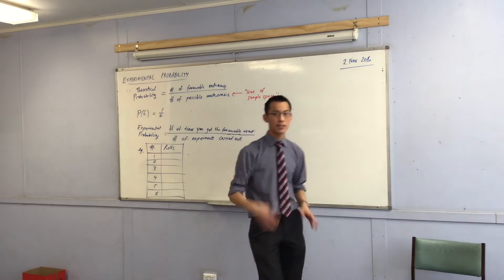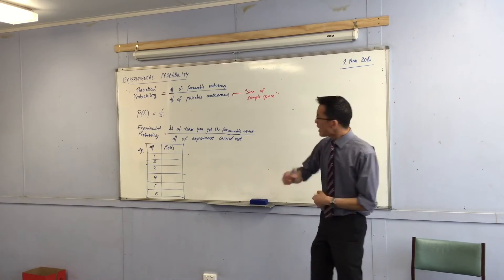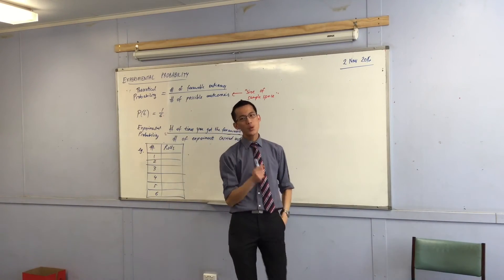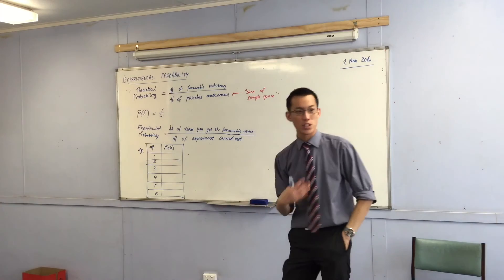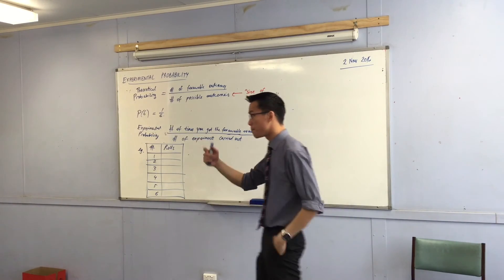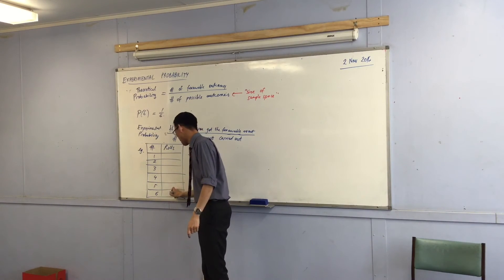Suppose we roll this thing 60 times. Suppose we roll it 60 times. If this theoretical probability was perfectly true, what would you expect to get? How many times would you expect to get a 6 if you rolled 60 times? How many times? Exactly 10, right? That's what you would expect. Let's just write down 10, okay?